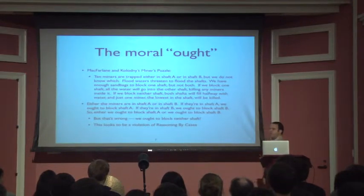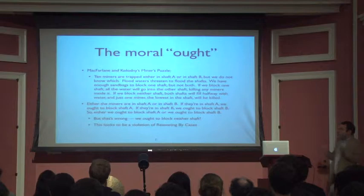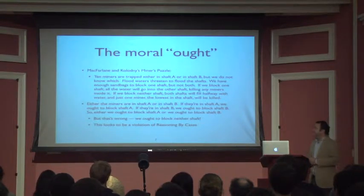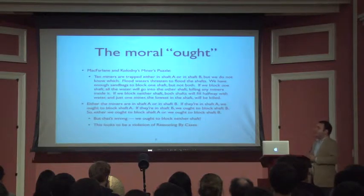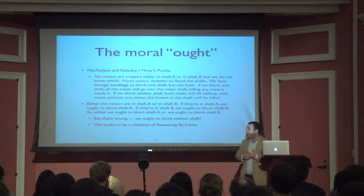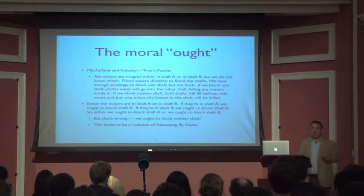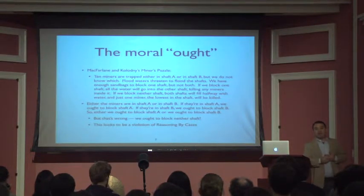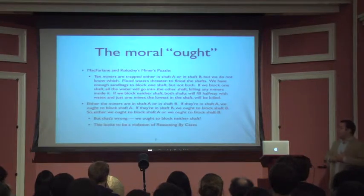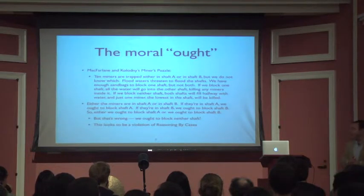Here's an argument that looks to fit reasoning by cases but is a bad argument. Either the miners are in shaft A or shaft B. If they're in shaft A, then we ought to block shaft A. If they're in shaft B, we ought to block shaft B. So either we ought to block shaft A or we ought to block shaft B — either way, we ought to block one of them. Again, that looks like the wrong conclusion. McFarlane and Kolodny insist we ought to block neither shaft. So any argument that entails we ought to block one of them would have to be wrong. This again looks to be a violation of reasoning by cases — we've constructed a conditional that misbehaves, not by violating modus tollens, but by violating reasoning by cases.